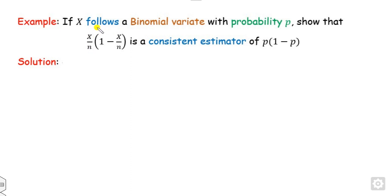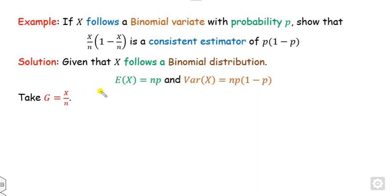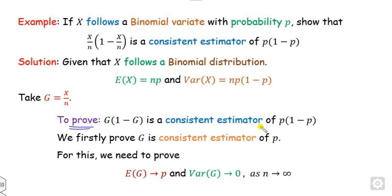Now let us look at one example. If X follows the binomial distribution with probability p, then show that X/n · (1 - X/n) is a consistent estimator of p(1-p). What is given: X follows the binomial distribution, so we know the mean and variance. To prove this, I consider g = X/n, and the target is to show g(1 - g) is a consistent estimator of p(1-p). I can do this by first proving g is a consistent estimator of p.